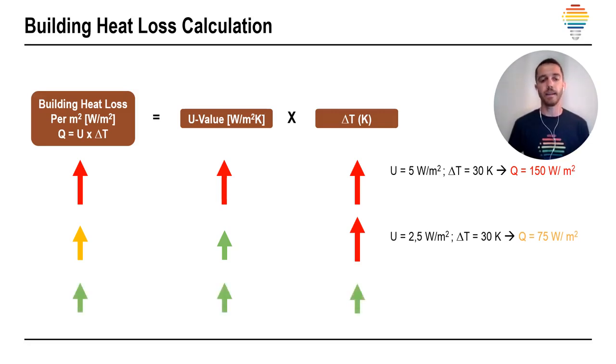And ideal example is if we have low U value and low delta T, our building heat loss is even lower. For example, U value is 2.5 watts per square meter, delta T is 15 Kelvin. So, typical autumn cold day, like outside is 5 degrees, inside is 20 degrees. We have only 37.5 watts per square meter heat loss in that building.